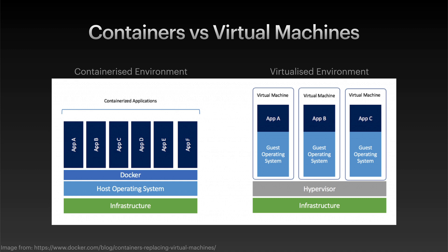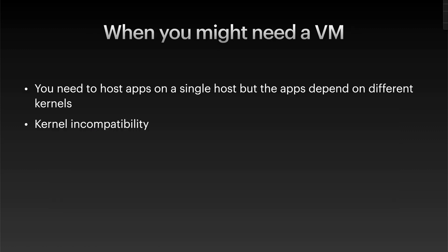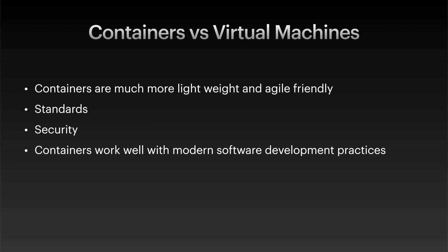Whilst I would always look to containers first when deploying a new application, there may be some situations where a VM is required. VMs work by emulation — the abstraction of a hypervisor layer virtualizing hardware components — which allows, say, a Windows and a Linux VM to run side by side on the same infrastructure, even though those two OSs do not have any common kernel between them. Similarly, a container built on an image compiled with a modern kernel may not be compatible with a host running a much older kernel, or vice versa. So if the kernel can't be shared due to incompatibility, VMs can be used.